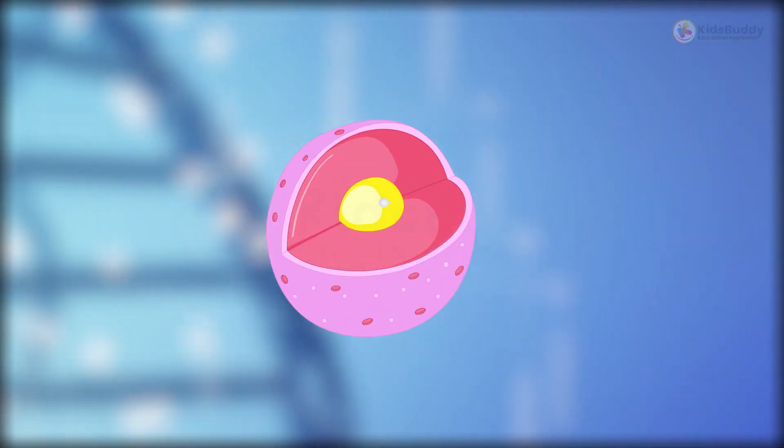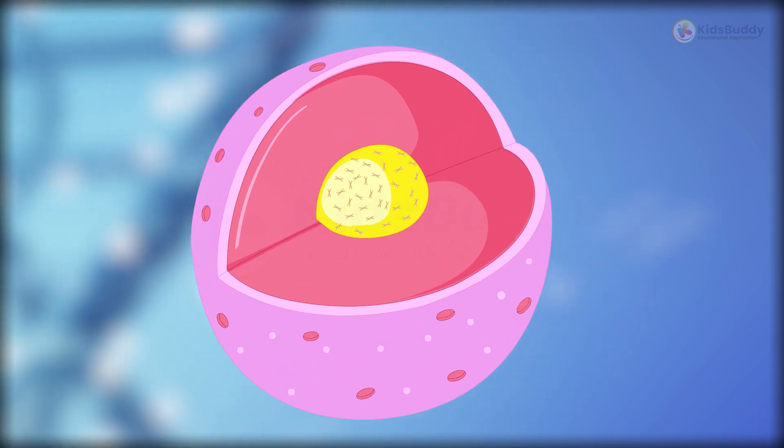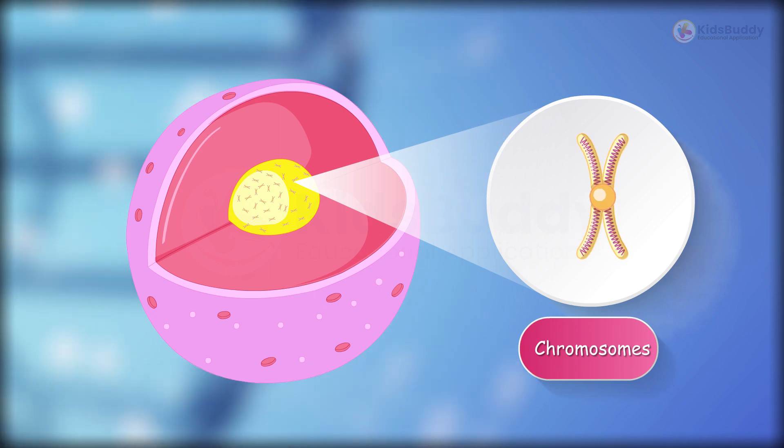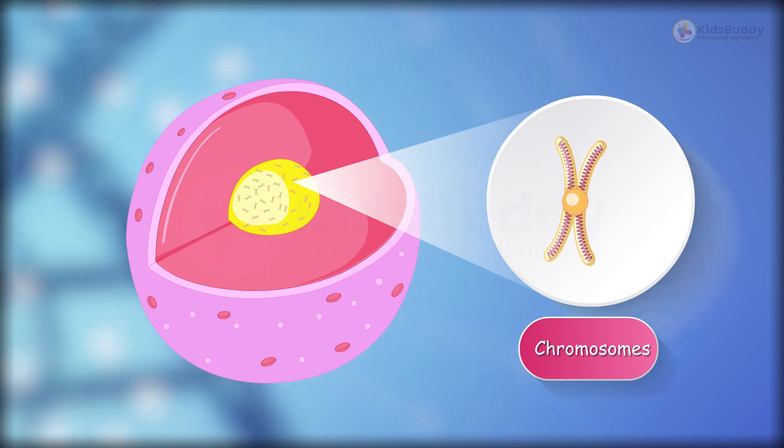Nucleus is known as the brain of the cell. If we look inside the nucleus, we will find chromosomes that carry out the instructions for the cell.